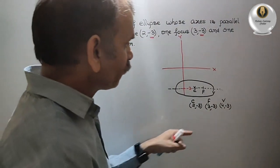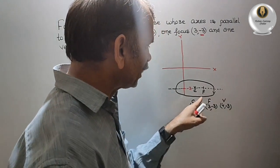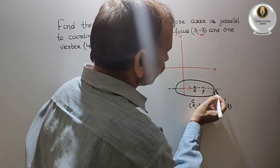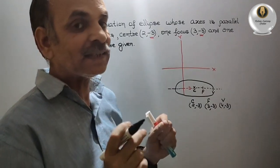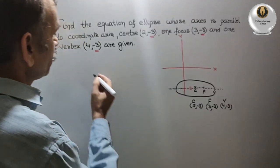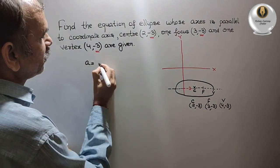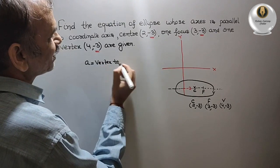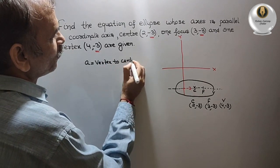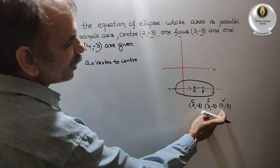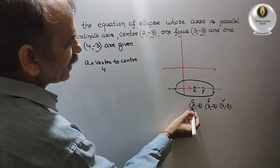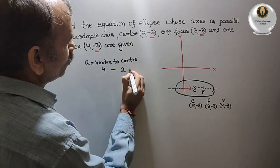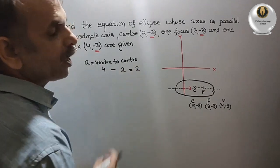We know that from the vertex to the center gives us the semi-major axis 'a'. The vertex x-coordinate is 4 and the center x-coordinate is 2. So 4 minus 2 gives us a = 2.